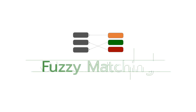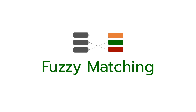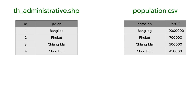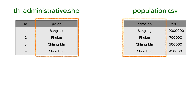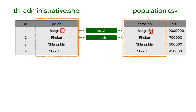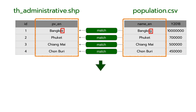Let's talk about fuzzy matching. You can call it pattern matching, similar matching, or partial matching. Fuzzy matching will help you join the tables together even when the data does not match exactly 100%, like row number 1. The result will look like this.